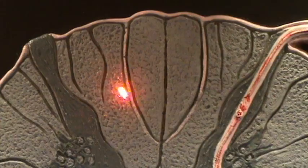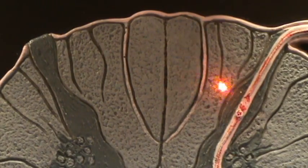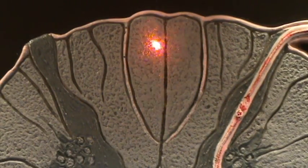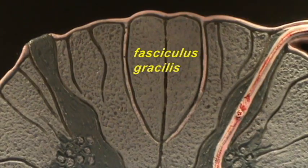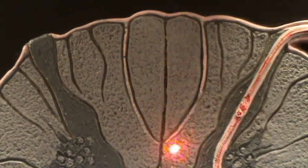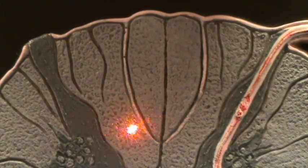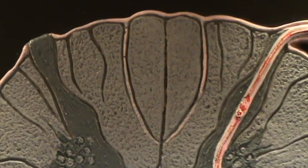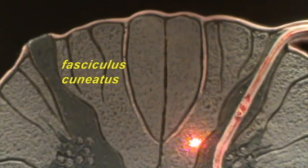You find in the posterior white columns primarily axons that are carrying sensory information up to the brain. In the medial part of the posterior white column, you have the axons that are bringing information from the lower limbs and the lower part of the body — this is referred to as the fasciculus gracilis. As the spinal cord ascends closer to the brain, it picks up fibers carrying information from the upper part of the body and the arm. The white matter carrying those axons is called the fasciculus cuneatus.